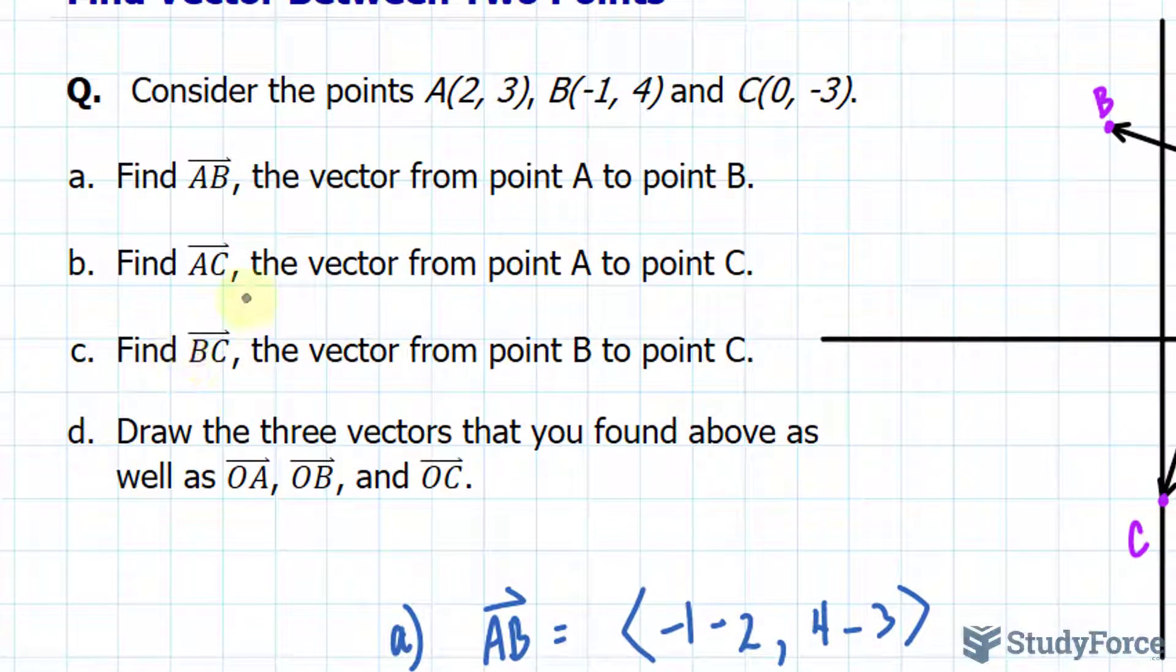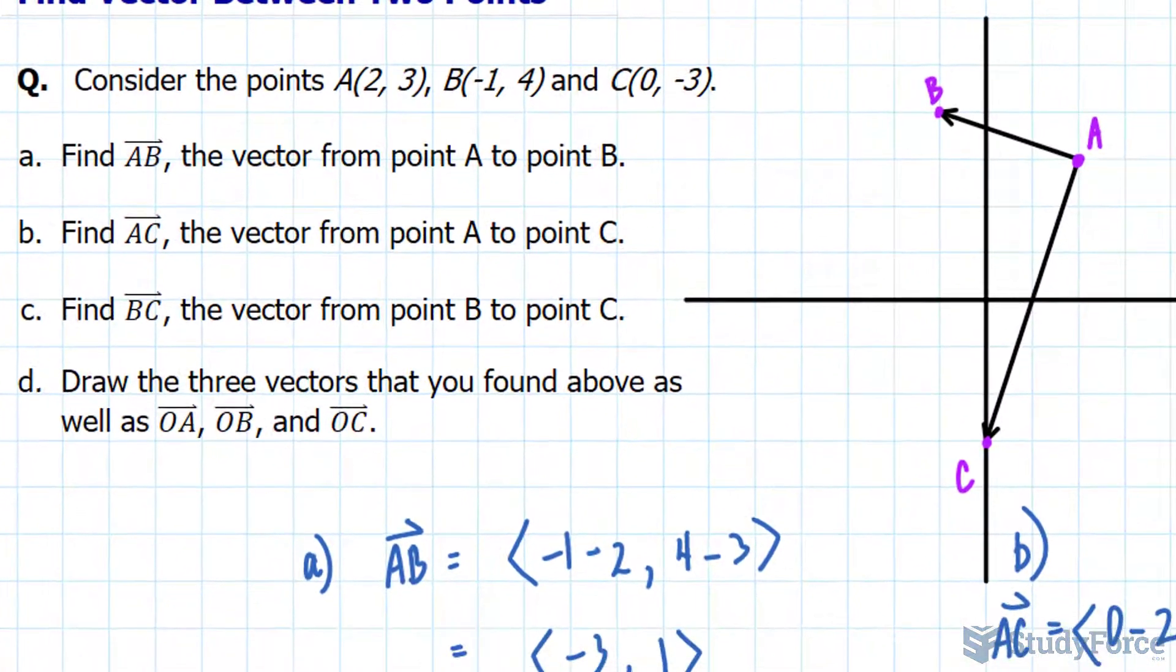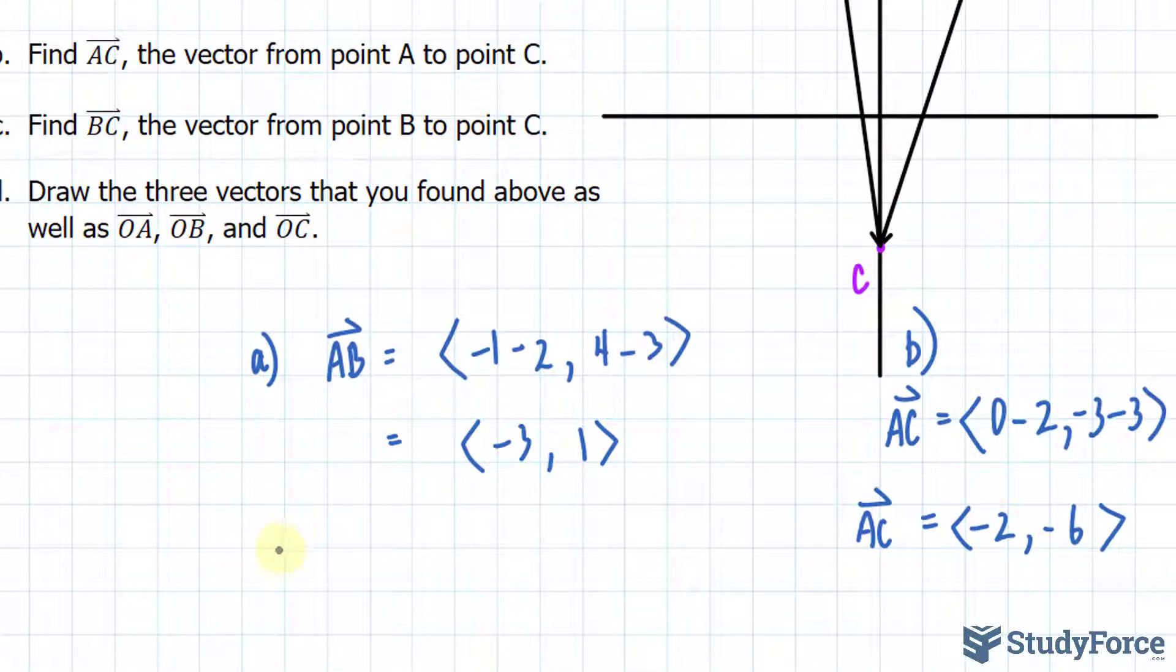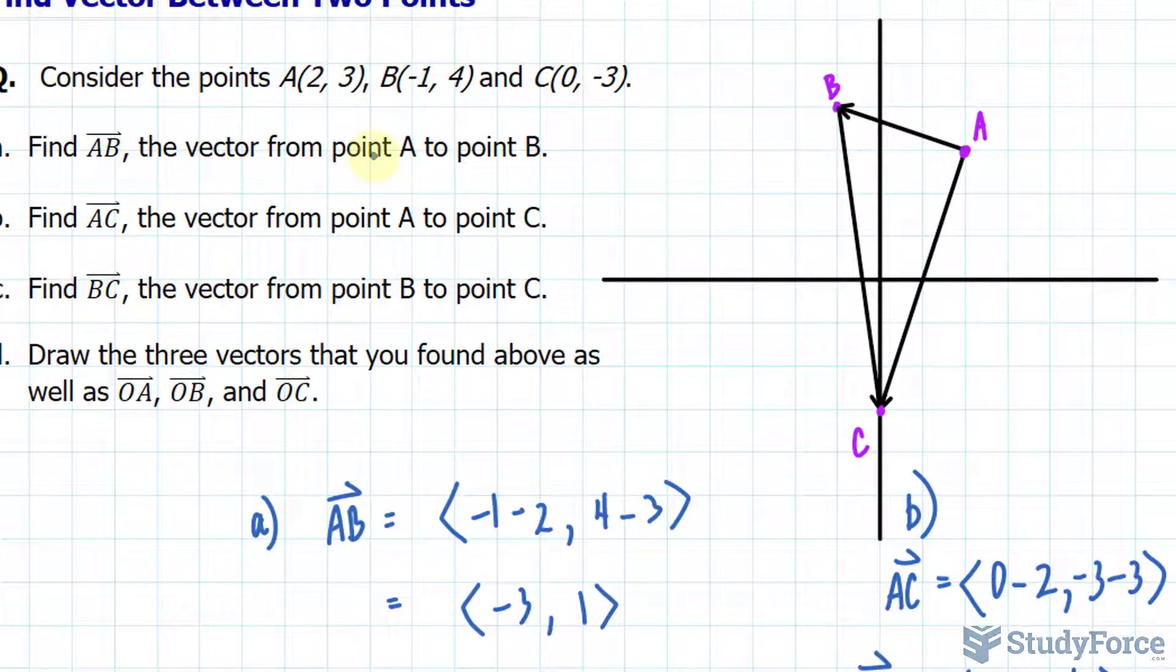And finally, a vector that spans between B and C. So we start at B and end at C. I'll write the answer down over here. We'll subtract the coordinates of B from that of C.